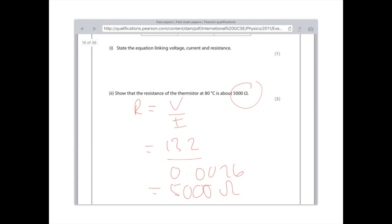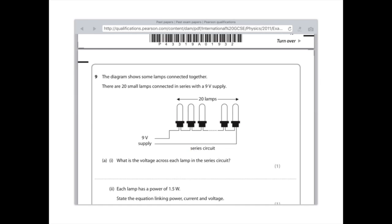Question 9: the diagram shows some lamps connected together. There are 20 small lamps connected in series with a 9-volt supply. What is the voltage across each lamp in a series circuit? You've got to remember your circuit rules here. In a series circuit, the voltage is shared between all the devices. There are 20 lamps, so you need to do 9 divided by 20, and you'll get an answer which is 0.45 volts.